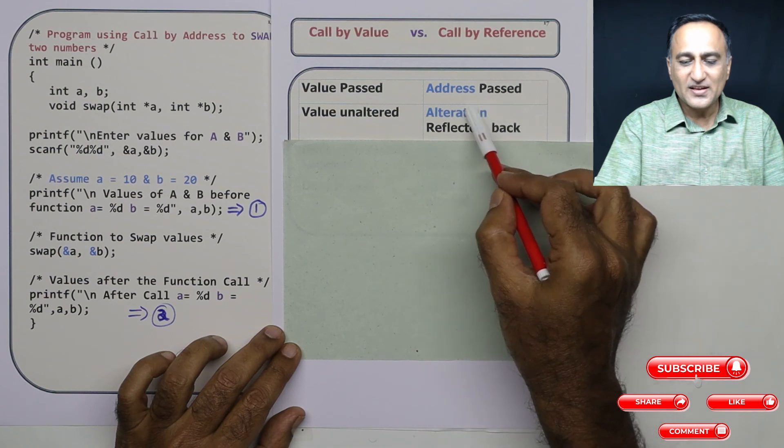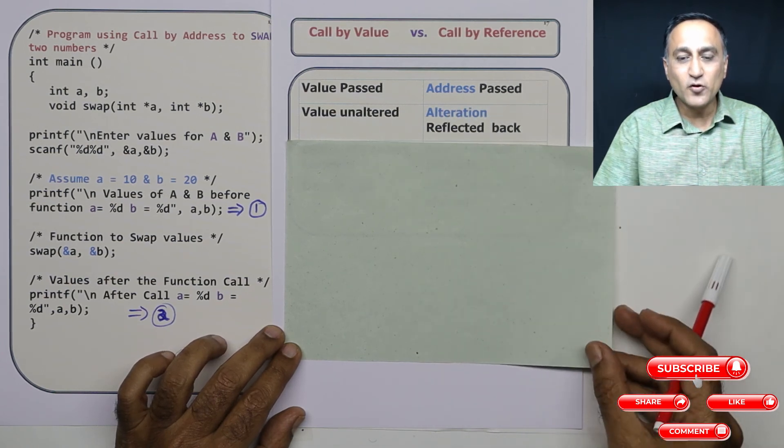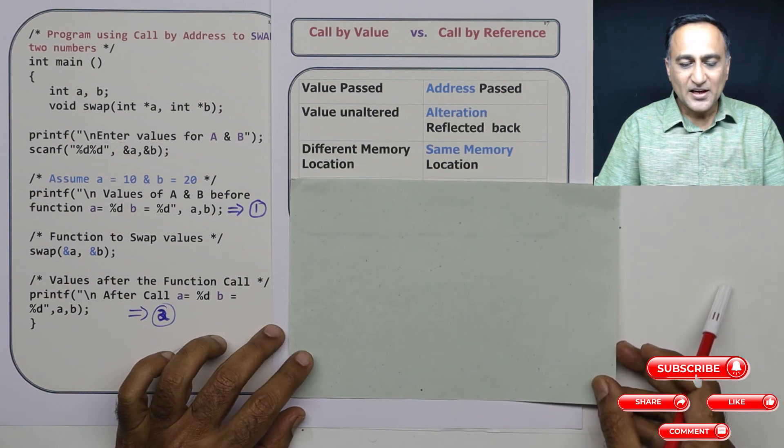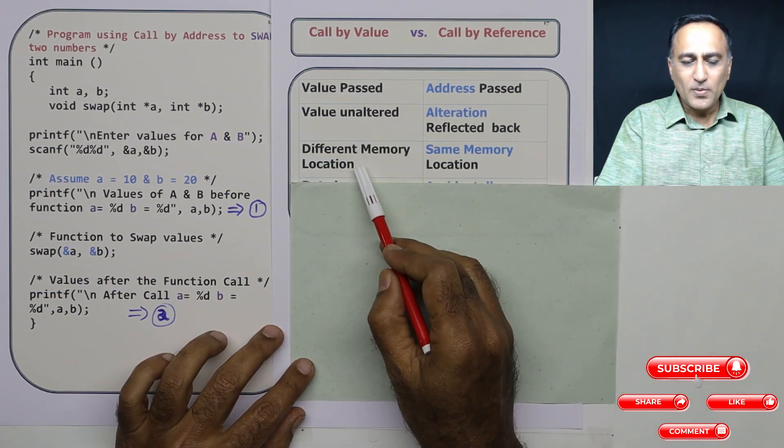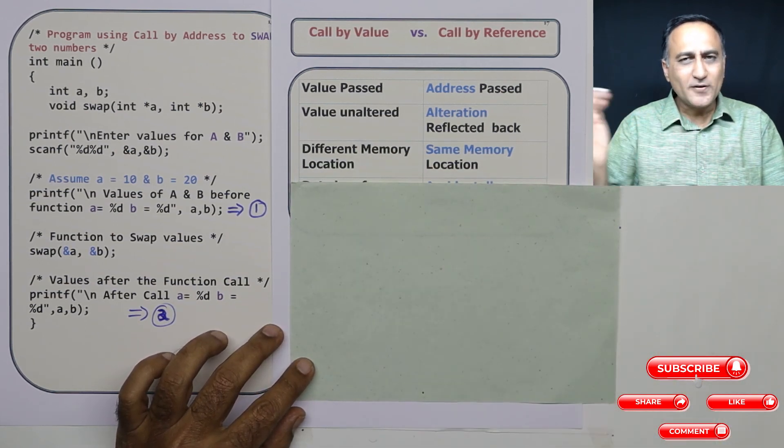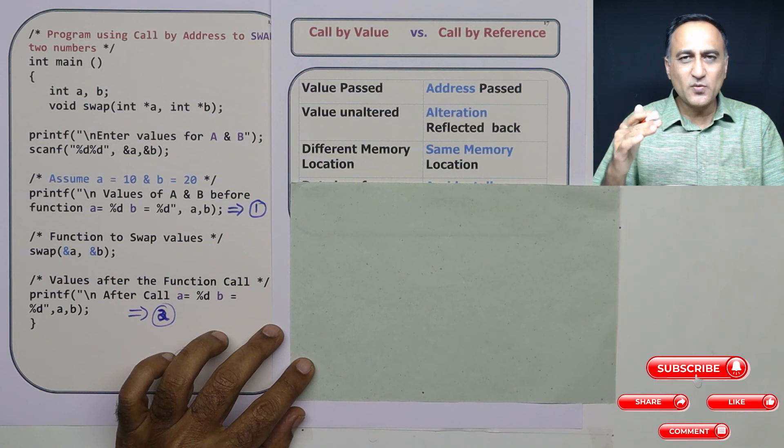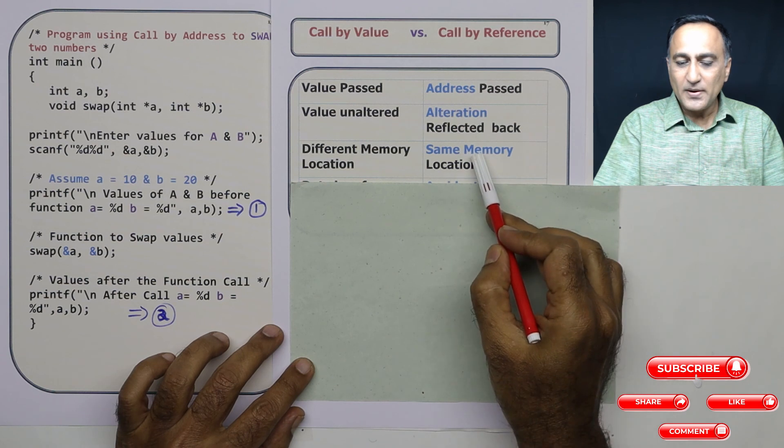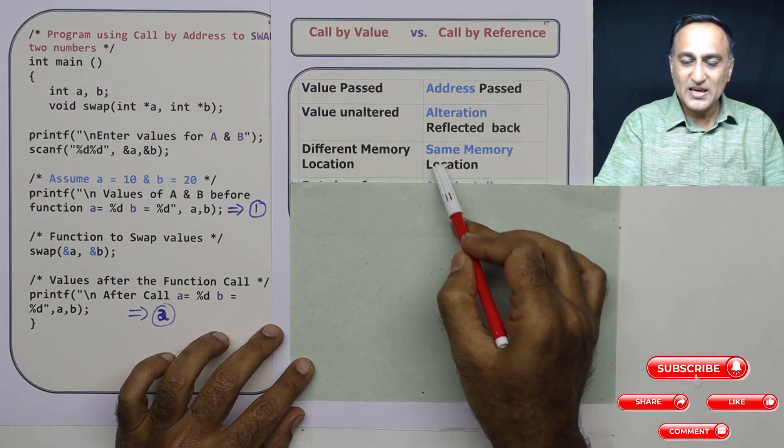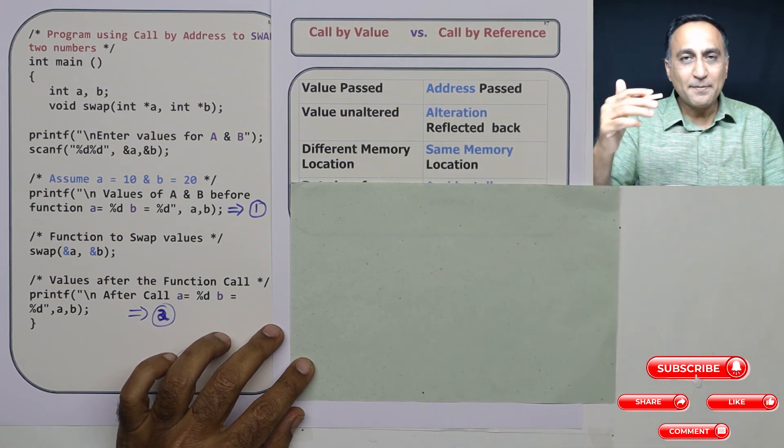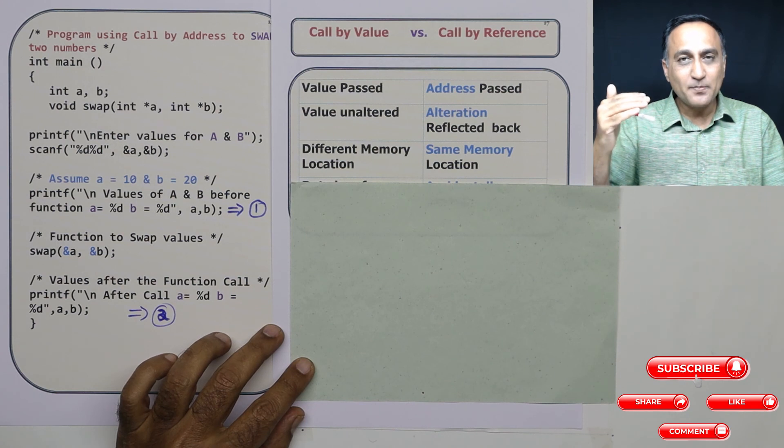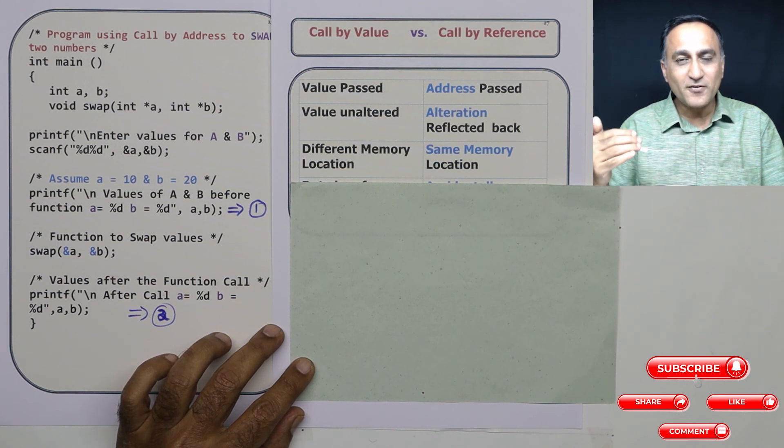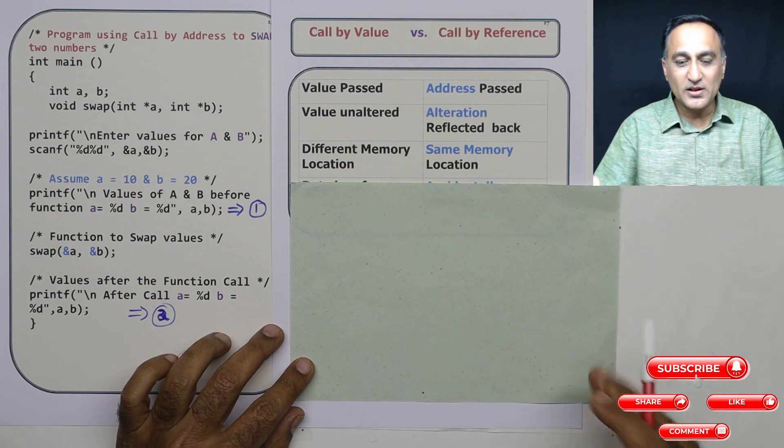Now in call by value, I'm dealing with two different memory locations. One is the original value and one is the duplicate value, nothing is going to happen to them. In call by reference, I am working with the same memory location because I am passing the address. So if I play around with the variable in the called function, it is going to affect that value in the main.